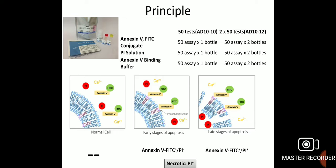If a cell is in early apoptosis, only FITC (Annexin V) will bind and PI will be negative. If the cell is in late apoptosis, both FITC and PI will be positive. If the cell is necrotic, only PI will bind, since PI only binds to dead or necrotic cells. The kit for this assay contains PI solution, Annexin V binding solution, Annexin V-FITC conjugate, and buffer.